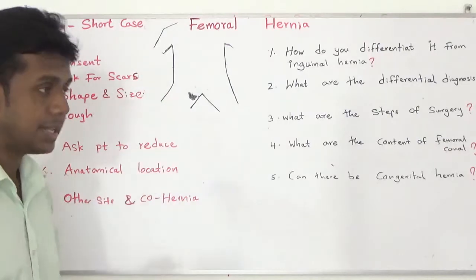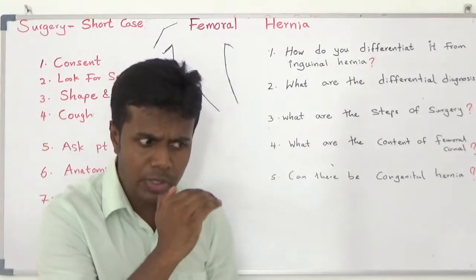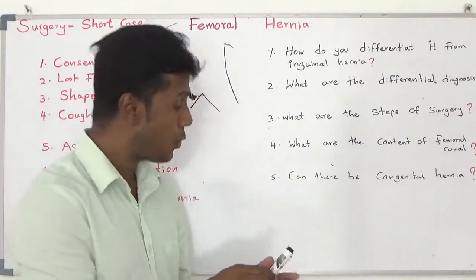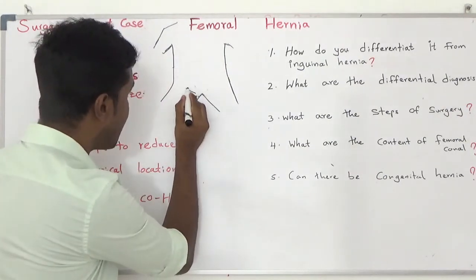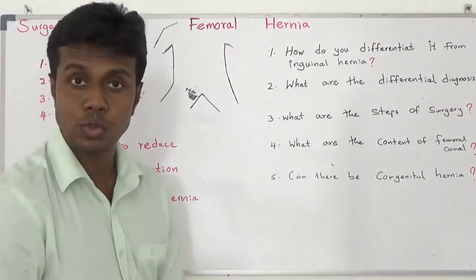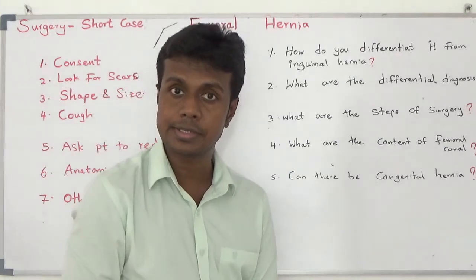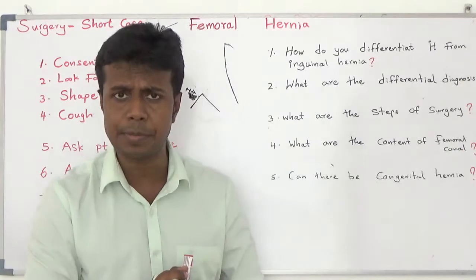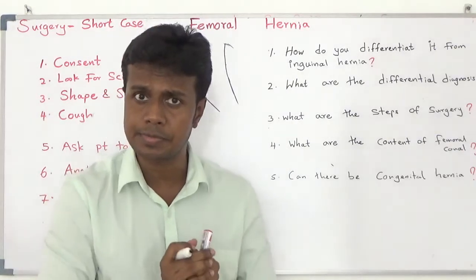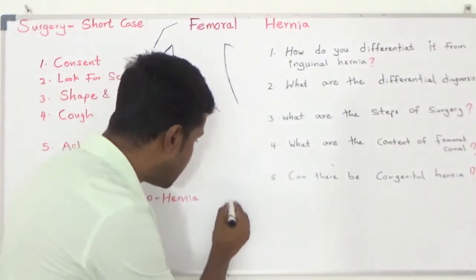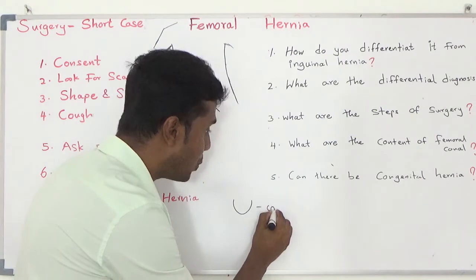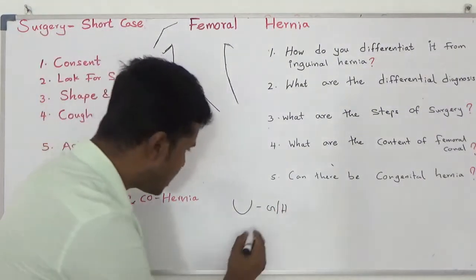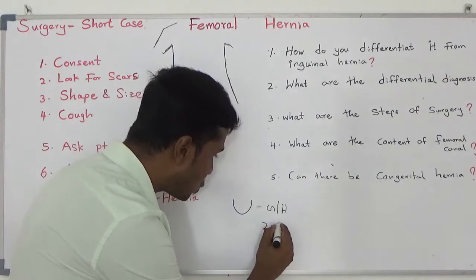Number one: consent, then there is a hernia. Carefully look — are there any scars? If you find a scar very close to the lump, it will indicate recurrence. Then carefully look at the shape and size. The usual femoral hernia shape is globular or hemispherical, size 2–3 cm.